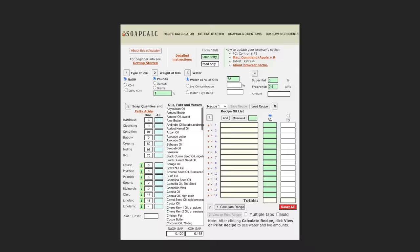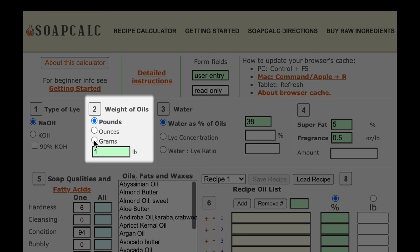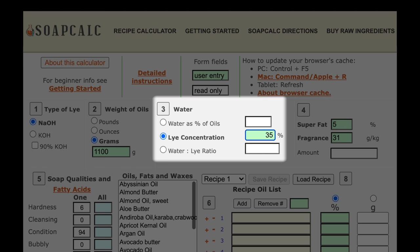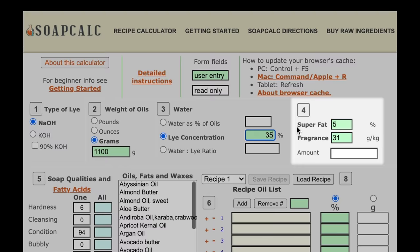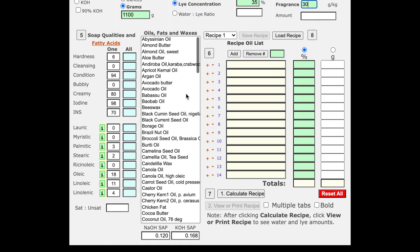Since this was a cold process soap, I made sure the type of lye was set to sodium hydroxide, or NaOH. My recipe oil weight was 1,100 grams. My lye concentration was 35%, which means my lye solution consisted of 35% sodium hydroxide and 65% water. I left the superfat at 5%, and my fragrance usage rate was 30 grams per kilogram. This recipe does contain lard, so I'll provide an alternative lard-free recipe that I really like following this one.